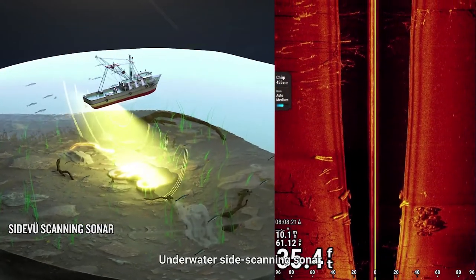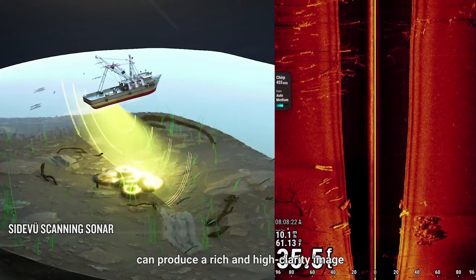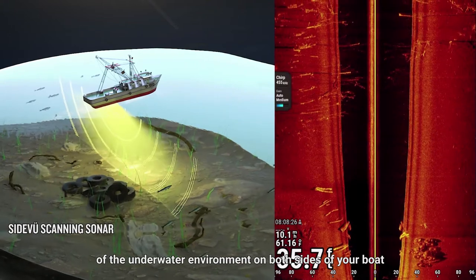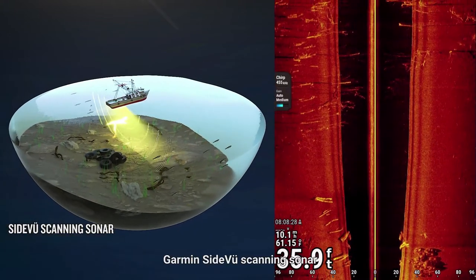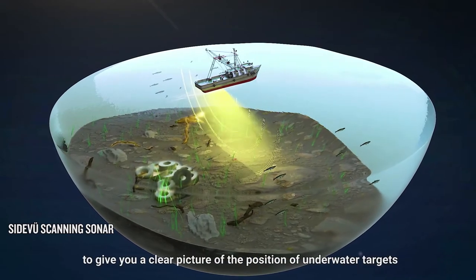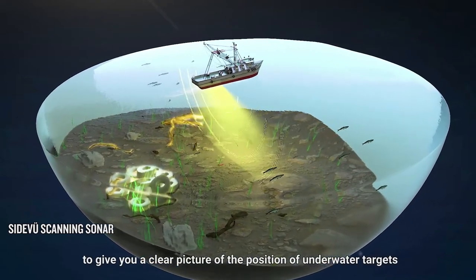Underwater side scanning sonar can produce a rich and high-clarity image of the underwater environment on both sides of your boat. Garmin's SideView scanning sonar uses Chirp sonar technology to give you a clear picture of the position of underwater targets.